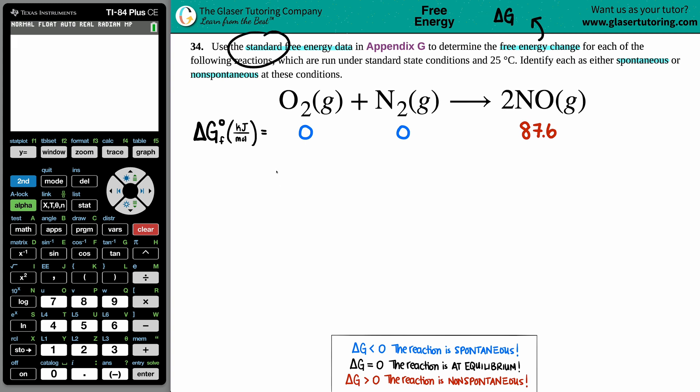Since we're using standard values and its standard state conditions, we're solving for a delta G notch. That little notch in the upper right-hand corner means that we have textbook values for our substances in our equation.